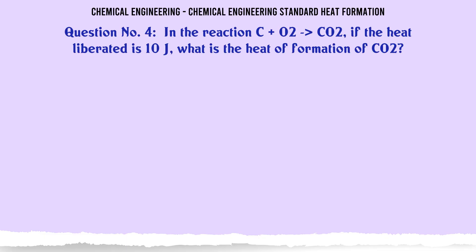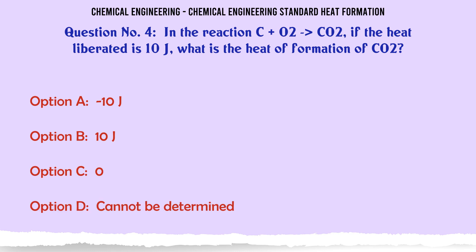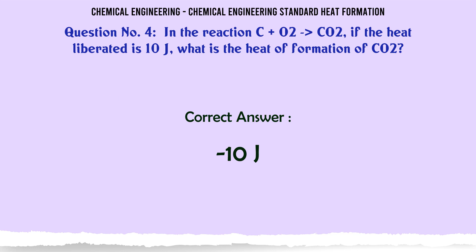In the reaction CO₂ → CO + O, if the heat liberated is 10J, what is the heat of formation of CO₂? A) 10J. B) -10J. C) 0. D) Cannot be determined. The correct answer is -10J.